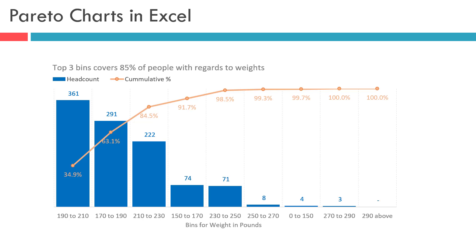With this presentation, it becomes clear that out of a total of 9 weight bins, only the top 3 bins account for 84% of the population. The rest of the bins account for just 15.5% of the headcount.